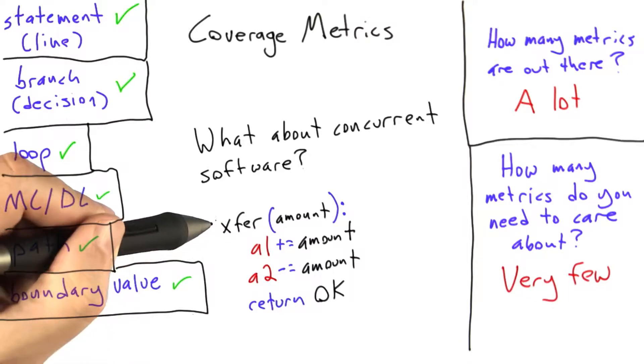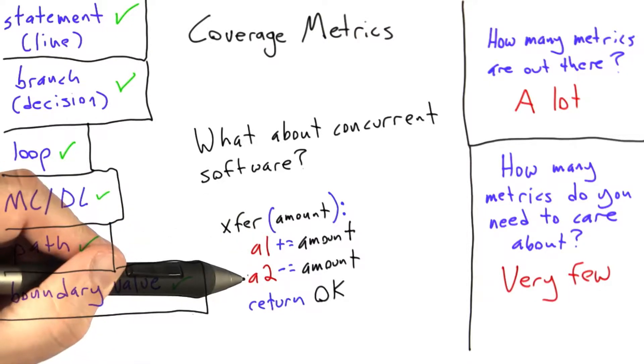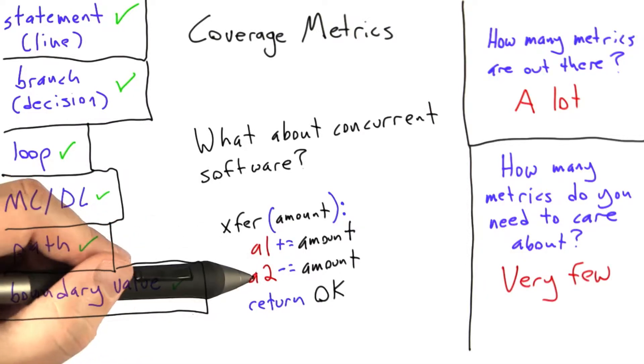This particular function is designed to be called from different threads. So what I've done here is marked a1 and a2 in red, and these variables are representing the different bank accounts, and they're in red to indicate that these are shared between different calls to exfer.